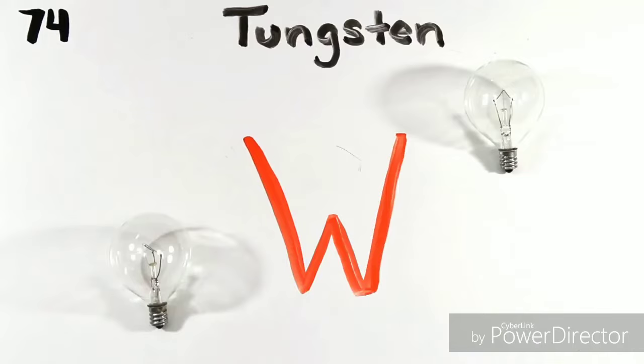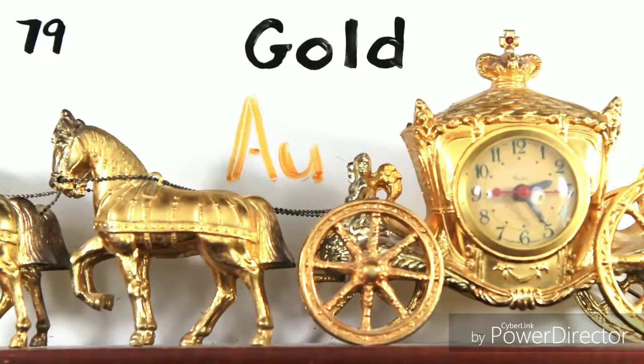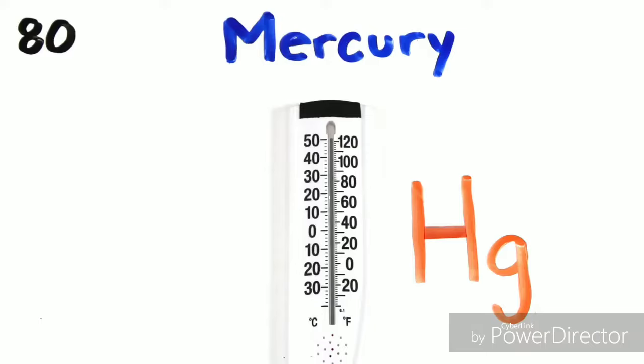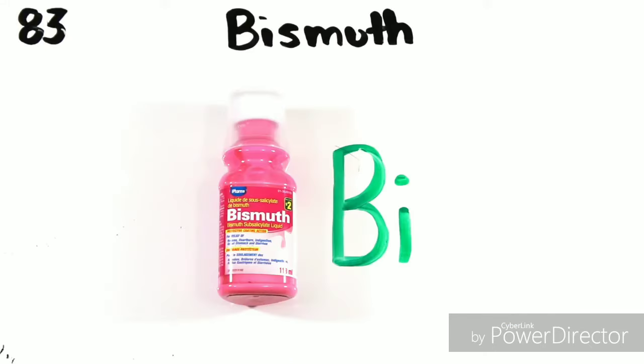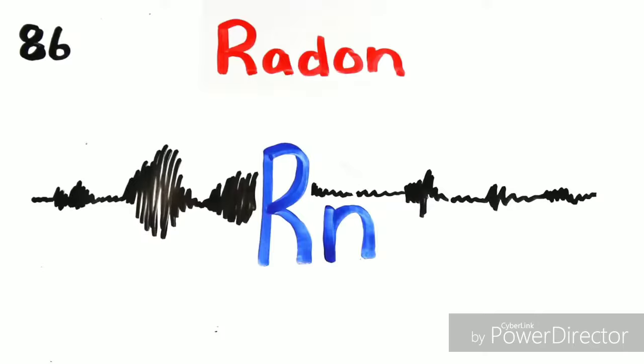Tantalum, tungsten, then we're on to platinum, gold to make you rich till you grow old. Mercury to tell you when it's really cold, thallium and lead, then bismuth for your tummy. Astatine would not be yummy. Radon.